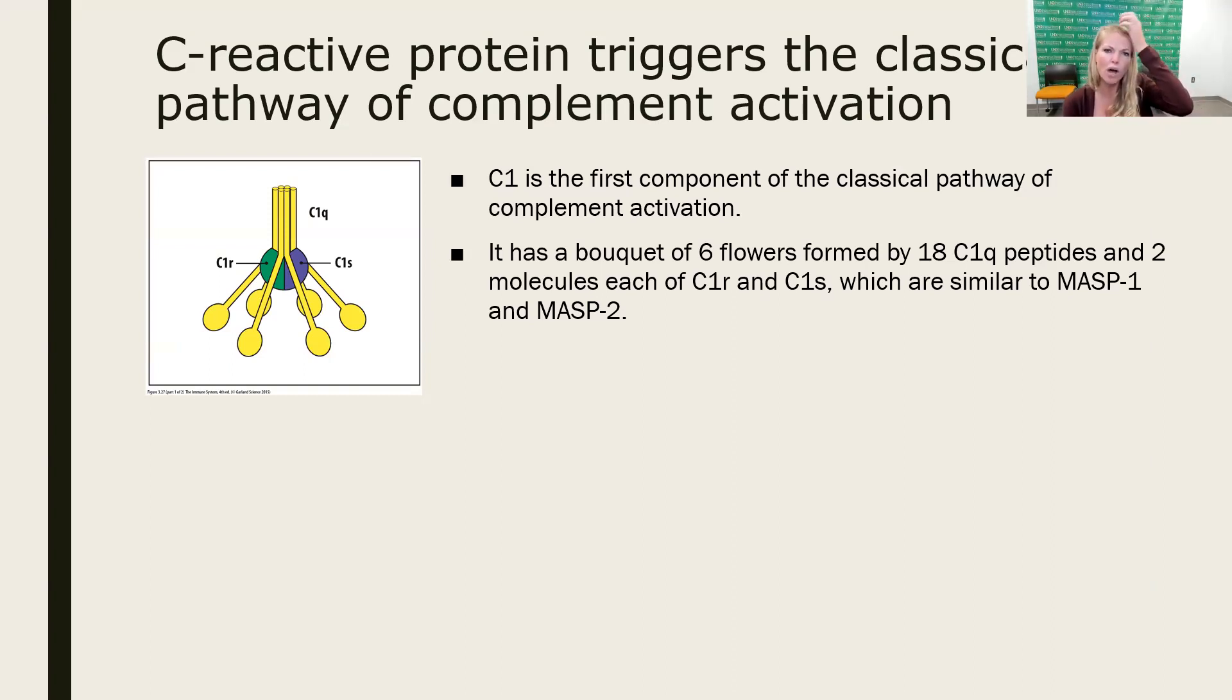Then you have these things called C1R and C1S. C1 is the first complement protein. So finally, now we have the numbers. We have C1, 2, 3, 4, and 5, and all of them. So now we've actually talked about all of the complement proteins. The stalk is made up of C1Q, and then the two zymogens that are going to be the serine proteases are C1R and C1S. You can see how they're associated with the stalk. C1R and C1S are similar in structure and function to the MASP1 and MASP2.